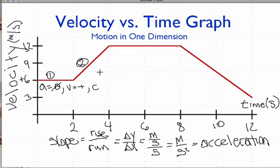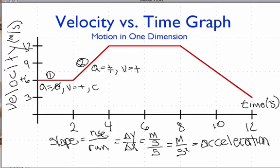In section two, the slope of the line is positive, and since slope equals acceleration, the acceleration is positive. All of the velocities — 3, 6, 9, 12 — are positive, meaning we're always going in the positive direction. So both the acceleration vector and the velocity vector point in the same direction, which means we are speeding up, going from 6 to 12 meters per second.